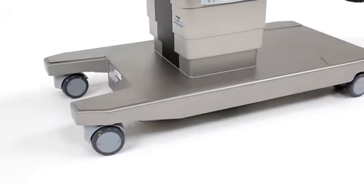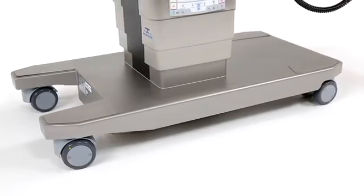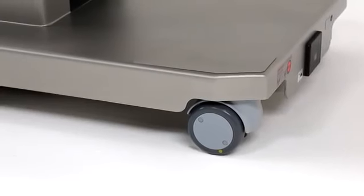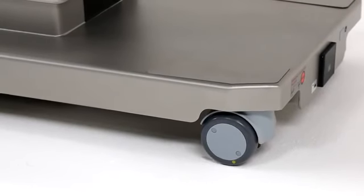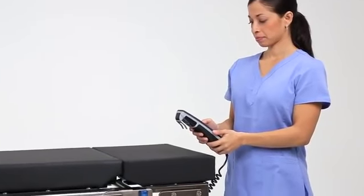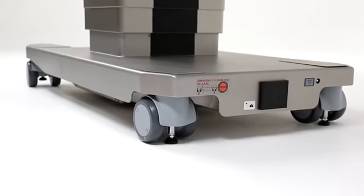From the ground up, the TruSystem 7000 was designed to deliver meaningful innovations that help hospitals care for patients, not struggle with difficult equipment. Larger, low-friction wheels were custom designed to improve mobility and withstand heavy use in an OR setting. The floor locks are positioned at the farthest corners of the base, giving the table the most solid foundation possible.